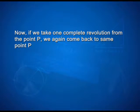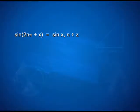Now, if we take one complete revolution from the point P, we again come back to the same point P. Thus, we observe that if x increases or decreases by any integral multiple of 2π, the values of sine and cosine functions do not change: sin(2nπ + x) = sin x, where n belongs to the set of integers Z. Similarly, cos(2nπ + x) = cos x, where n belongs to Z.